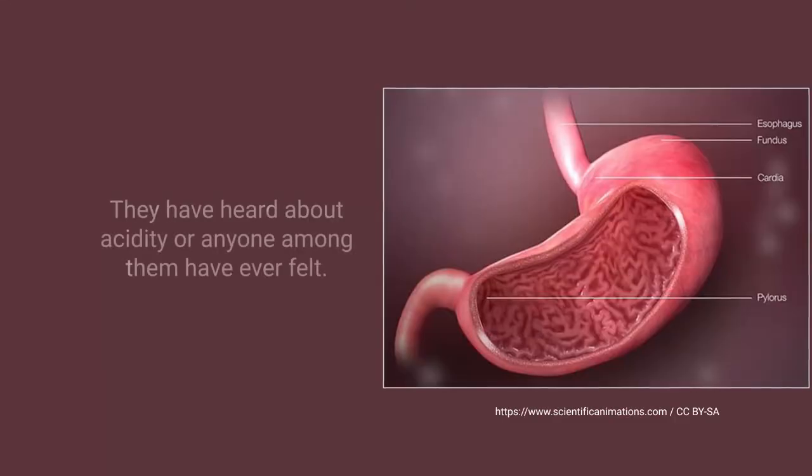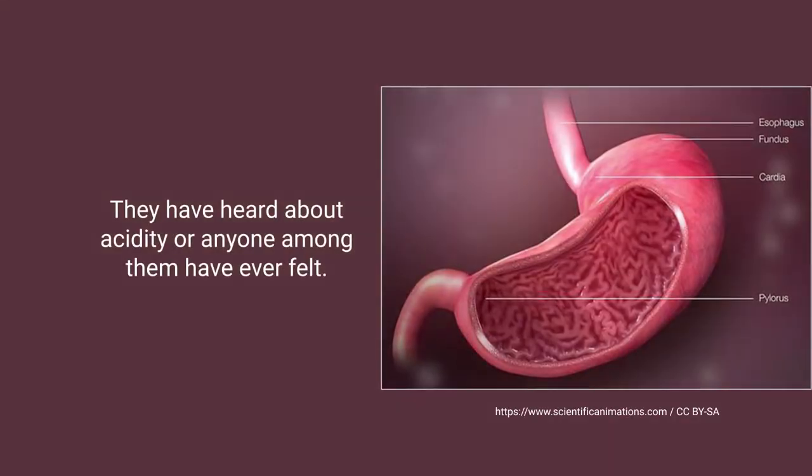The gastric glands release three things: hydrochloric acid, a protein-digesting enzyme called pepsin, and mucus. Students may ask why hydrochloric acid — since they know from chemistry it is a strong acid. You can relate it by asking: have you or anyone in your family ever felt acidity? Acidity means the presence of excess acid in the stomach.